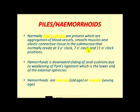What is a hemorrhoid? A hemorrhoid is downward sliding of the anal cushions due to weakening of the Parks ligament. The Parks ligament is the lower end of the external sphincter. If it is weakened, the cushions come down and lead to hemorrhoids, which can bleed furiously.